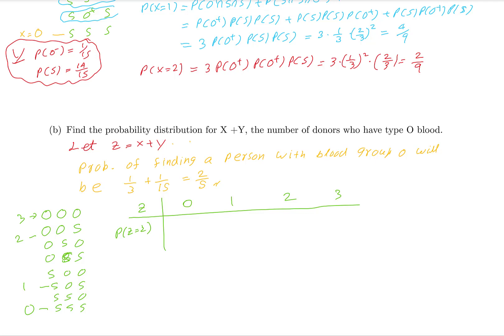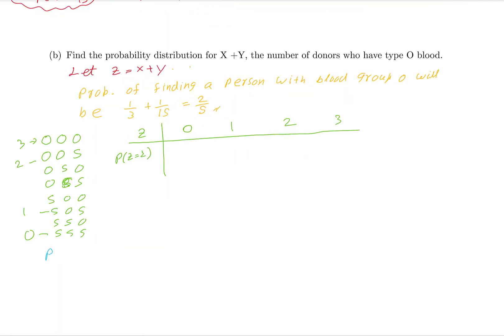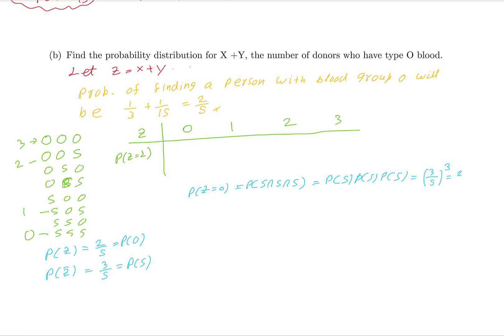P(Z=0) means all three donors are not blood group O, so it equals (3/5)^3 equals 27 over 125. For P(Z=1), there are three arrangements with exactly one O donor: P(Z=1) equals 3 times (3/5)^2 times (2/5) equals 54 over 125.